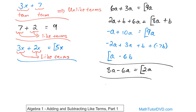Our final problem is negative 7x minus 9x plus b. The x terms are like terms, but b is totally unrelated. For the x terms: negative 7 minus 9x is the same as negative 7 plus negative 9. When you add two negative numbers you add the values and keep the negative sign, so you get negative 16. Then x comes along for the ride, and you keep the plus b. The final answer is negative 16x plus b — you can't simplify further because x and b are unlike terms.